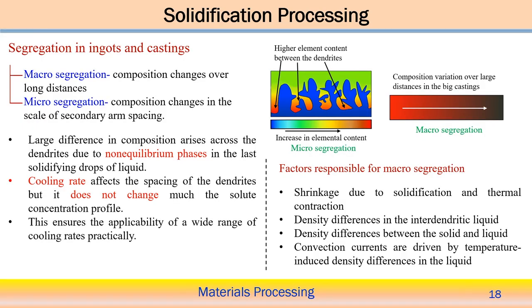One of the main difficulties during solidification is segregation — segregation of composition. On a large scale it is called macrosegregation, and on a very small, localized scale it is called microsegregation. Segregation means non-uniform distribution of composition, which creates a defective microstructure and is mostly associated with solidification processes. If we understand the solidification process properly, we can eliminate or reduce this segregation effect.